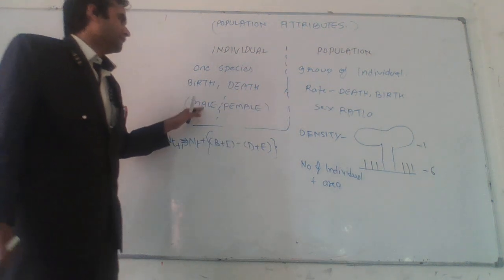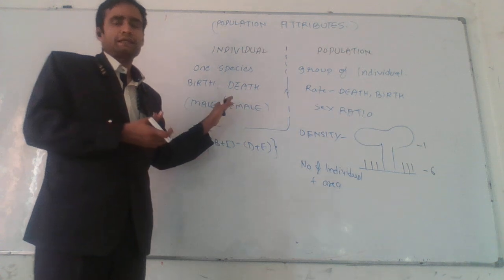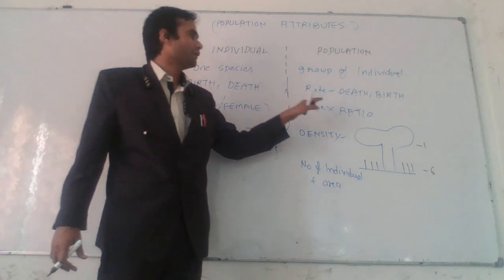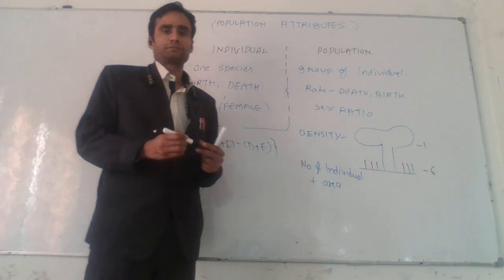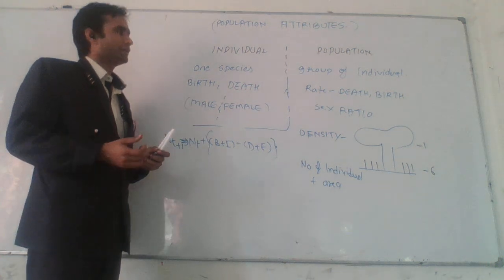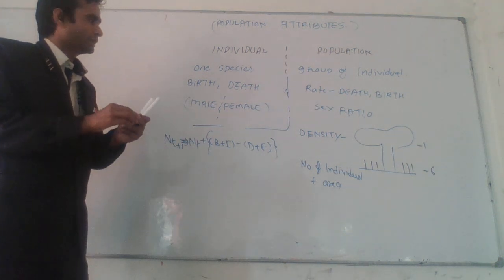In individuals, generally male and female are there, or both may be there like in the earthworm. And in the population, sex ratio is there. Sex ratio tells us how many males and females are present per 1,000 population.